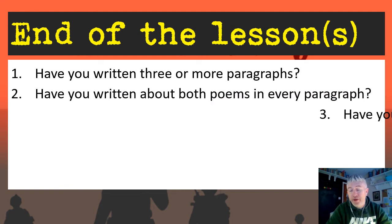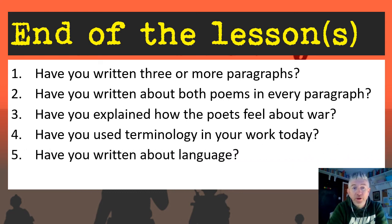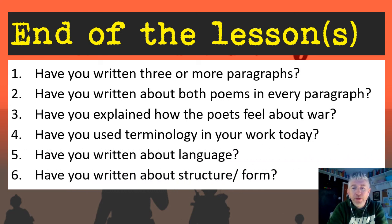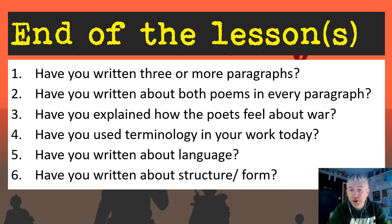At the end of your piece of writing, these are the things to check before you know you've finished. Have you written three or more paragraphs? Have you written about both poems in every paragraph? Have you explained how the poets feel about war? Have you used terminology in your work today? Have you written about language, structure, or form? Go through your answer and skim through to spot where you've done those things — you can even mark them in the margin with a number — then spot which ones you haven't done and go back and add a little bit extra before you turn your work in. Good luck — any questions, please let me know.